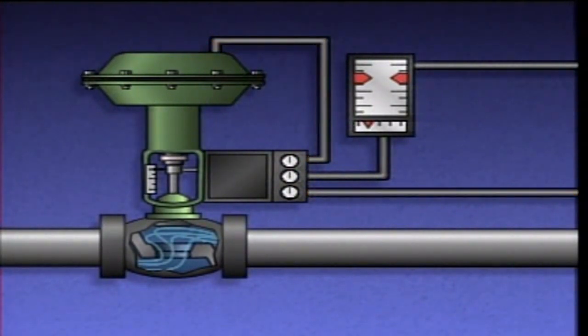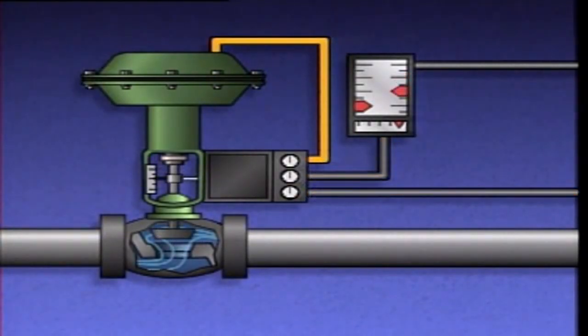When the controller sends a signal to close the valve, the positioner receives the signal and converts it to the appropriate air pressure using this air supply. This pressure is then applied to the actuator to close the valve.